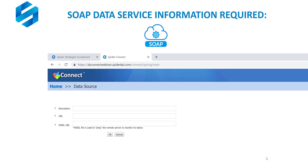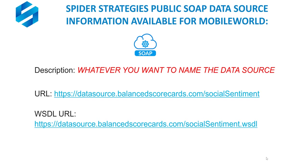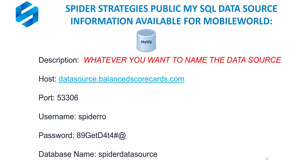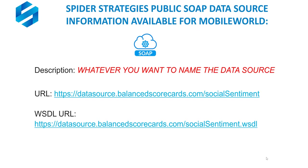With regard to a SOAP Web Services data source, the information our Connect utility requires is a description or name, a URL, and a Web Services Description Language — or WSDL — URL. The same data is available to you via a SOAP Web Services data source. The description can be whatever you want to name it. The URL and WSDL URL are both presented here, and if you need any information about either of these resources, please feel free to contact me personally.